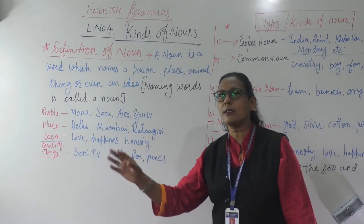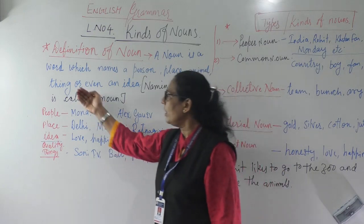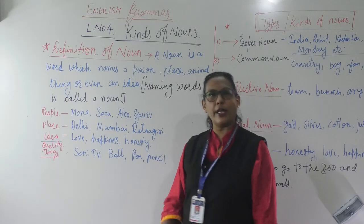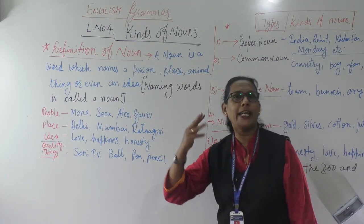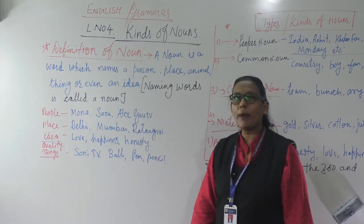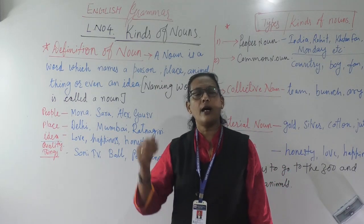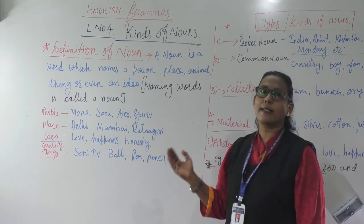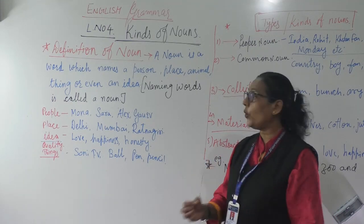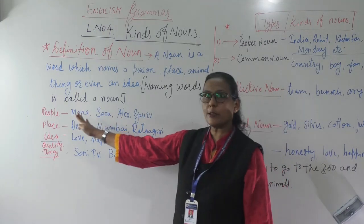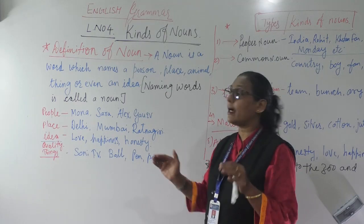Naming words are for place, people, idea, quality, or things. People may be Mona, Sarah, Alex, Gaurav — any name. Place names could be Delhi, Ratnagiri, Chennai, Mumbai — any place. As for idea and quality — one type of idea or quality — people, places, and things have a physical appearance in nouns. You can see them.